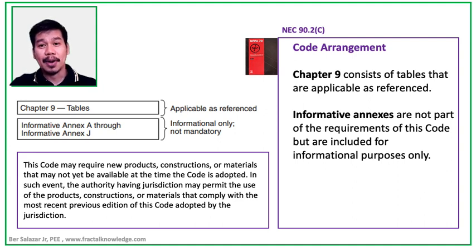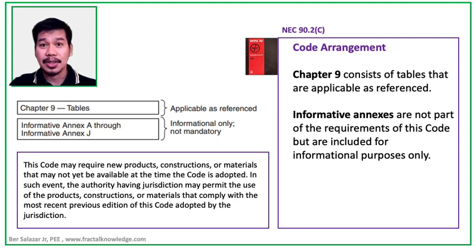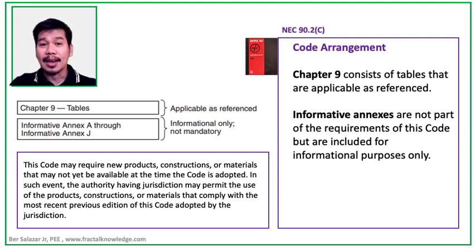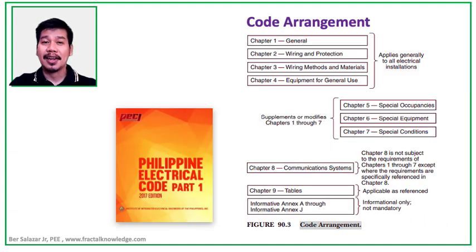The code may require new products, constructions, or materials that may not be available at the time the code is adopted. In such an event, the authority having jurisdiction may permit the use of the product or electrical construction or materials that comply with the most recent previous edition of the code adopted by the jurisdiction. Since the Philippine Electrical Code has no section on code arrangement, based on the organization of the code, we look similar to the National Electrical Code, and we can use the arrangement presented by NEC related to our Philippine Electrical Code.